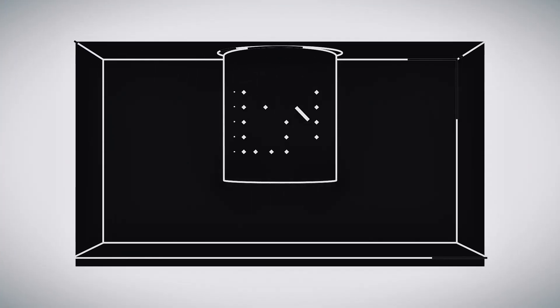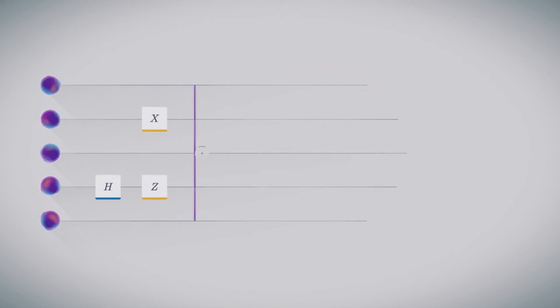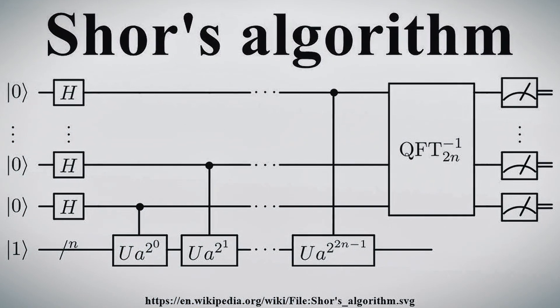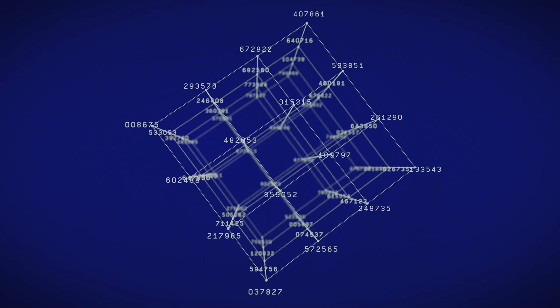It's like having a secret decoder ring that unlocks the mysteries of the universe in the blink of an eye, or in this case, the flick of a qubit. Take Shor's algorithm, for instance. This quantum heavyweight champion can factor large numbers so fast,